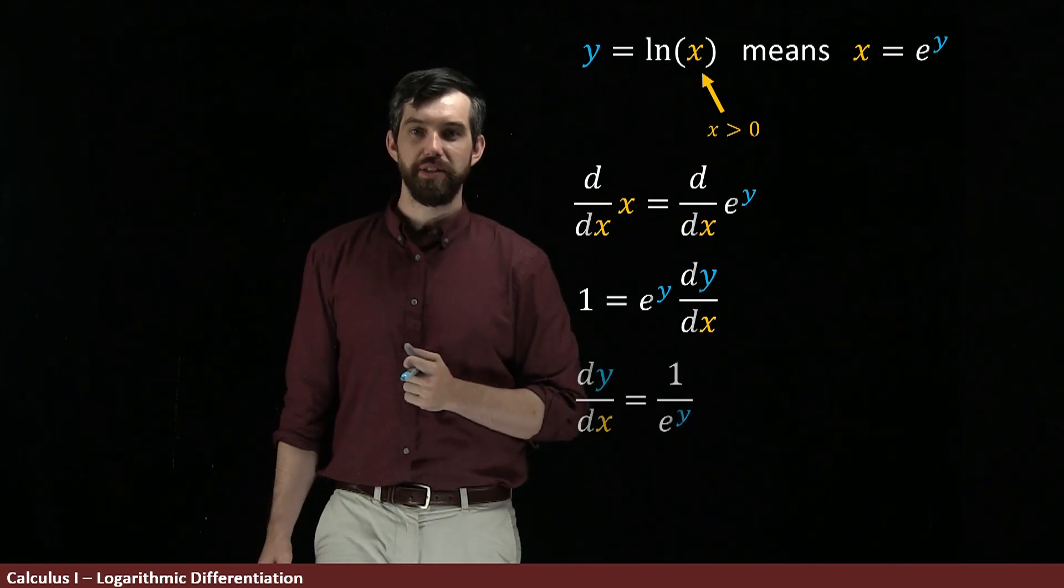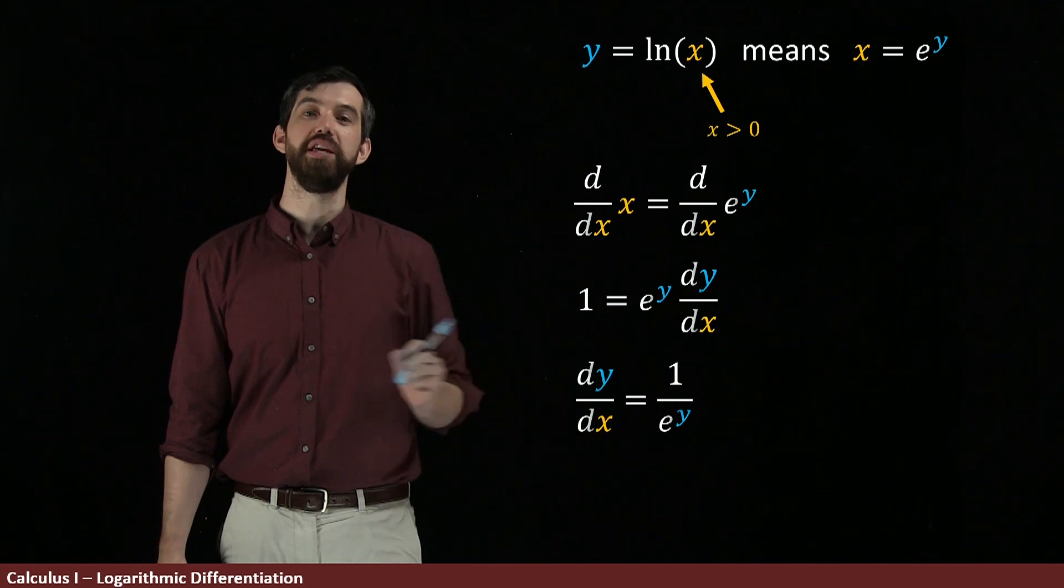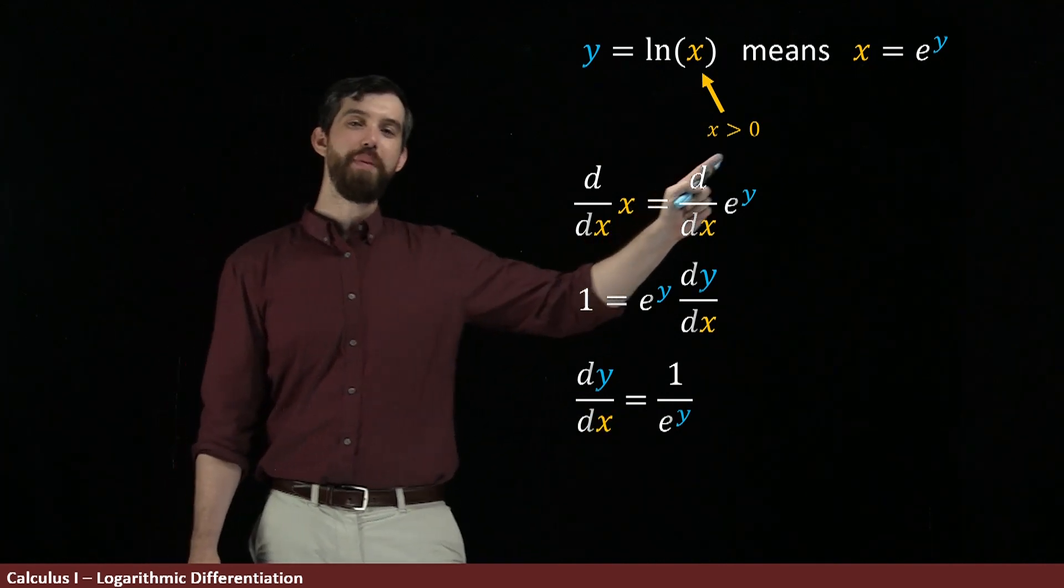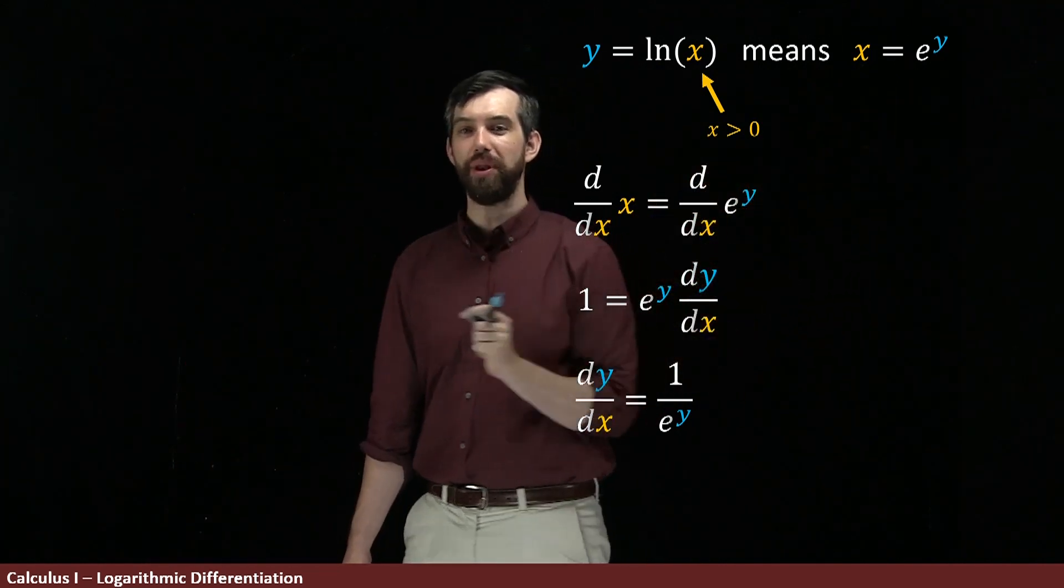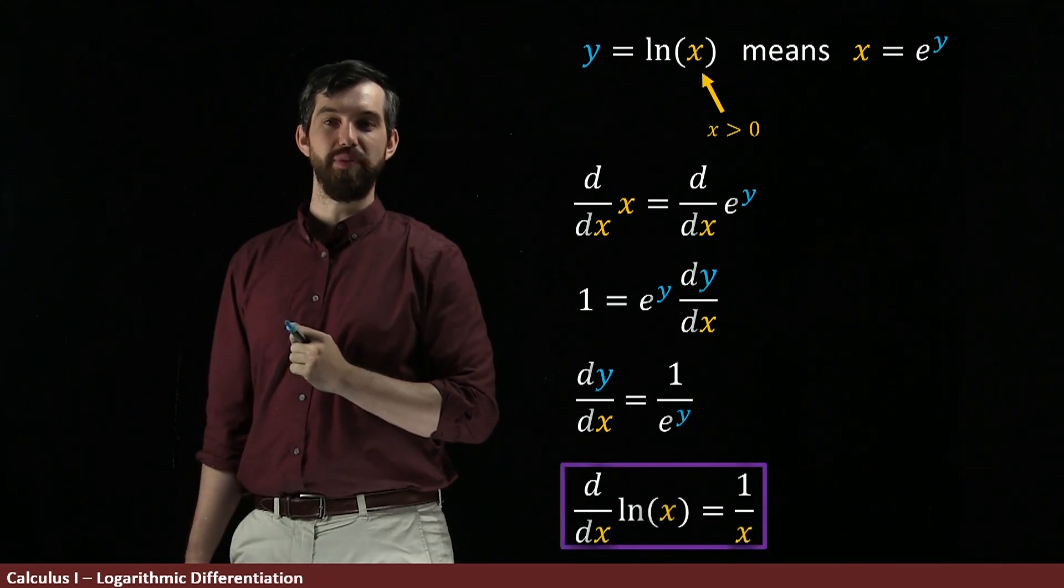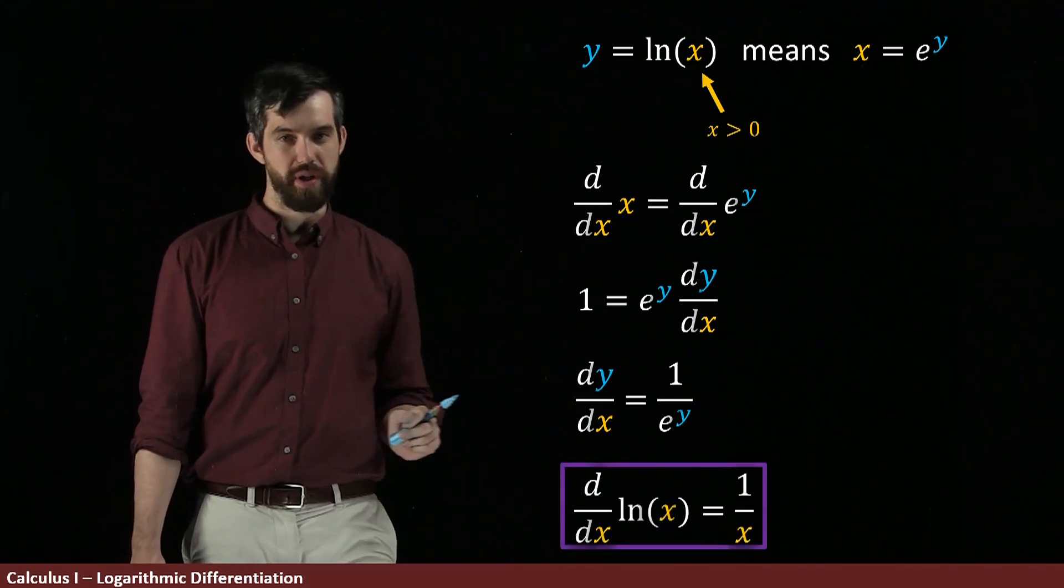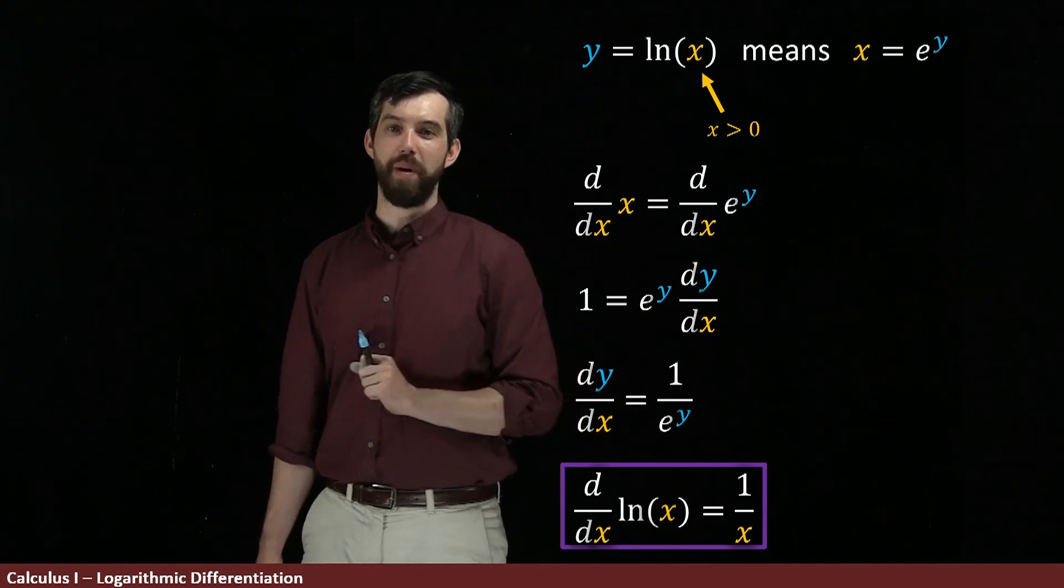I can then rearrange. This is going to give me that dy/dx is 1 over e to the y. And I can look all the way back at the beginning, e to the y, that was just equal to x. So this is just going to be the same thing as saying that the derivative of the natural logarithm is 1 divided by x.